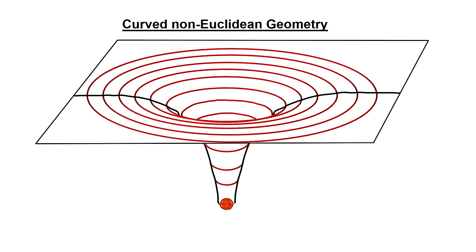But diagrams like this are misleading in two ways. First, they represent an external curvature into another dimension, when in fact we are talking about intrinsic curvature. There is no evidence for the existence of a fourth spatial dimension.